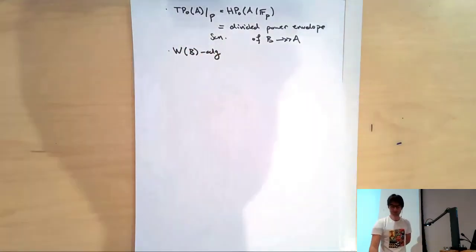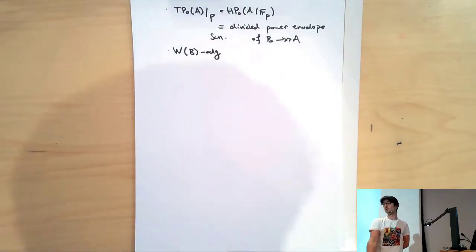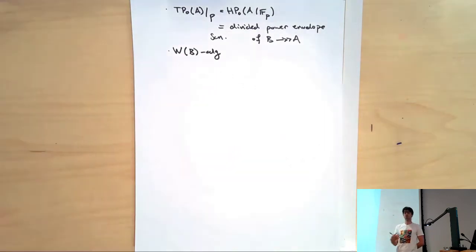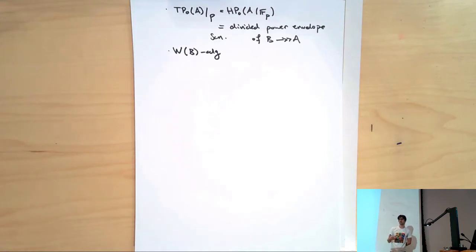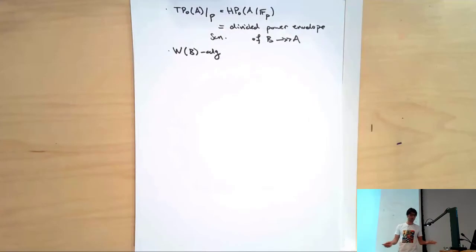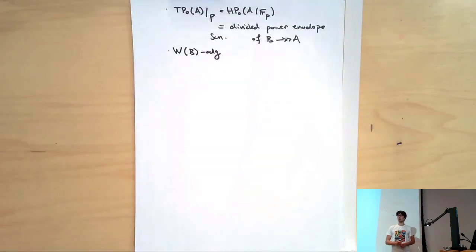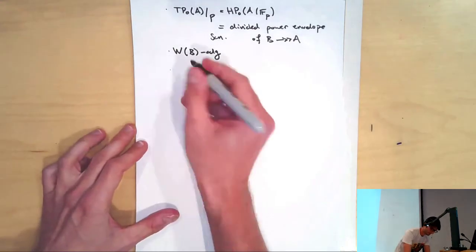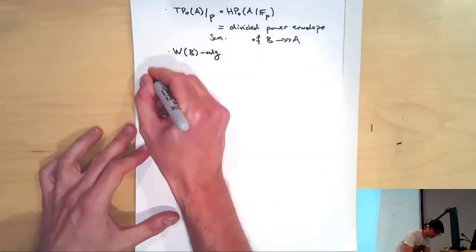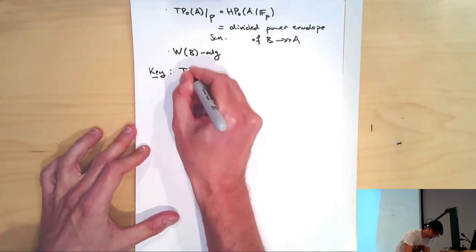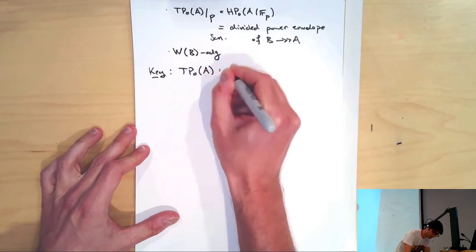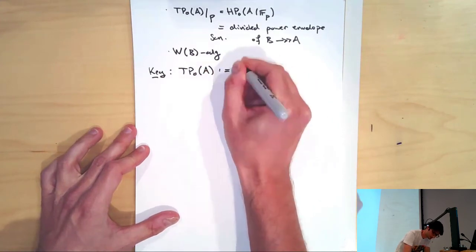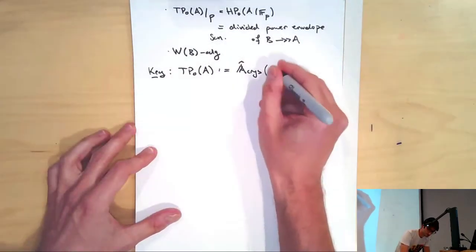How do we know that? TP0(A) will receive a map from TP0(B) by functoriality, and since B is a perfect ring, it behaves like FP, and its TP0 will just give us its ring of Witt vectors, in the same way as TP0 of FP gave us ZP this morning. So the goal is to identify this: we need some W(B) algebra which has lots and lots of divided powers related to the ideal I defining A. And somehow there's only one possibility — it's what's called the crystalline period ring associated to A.